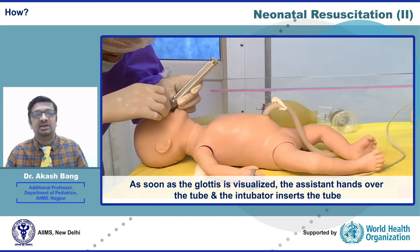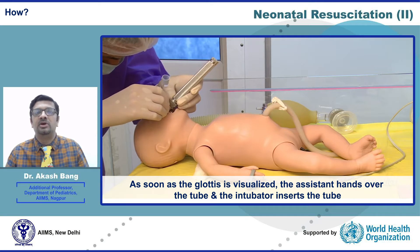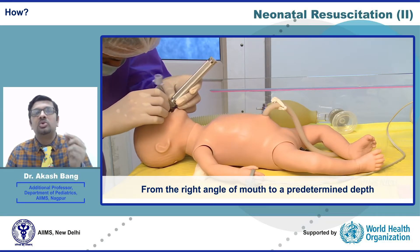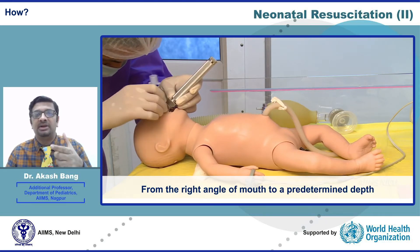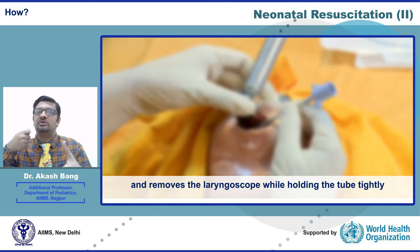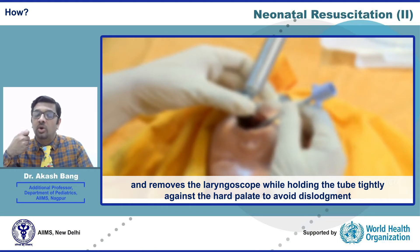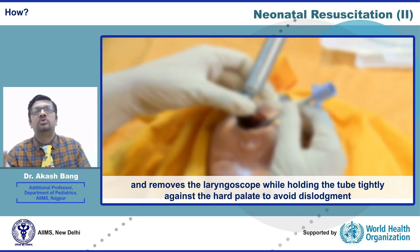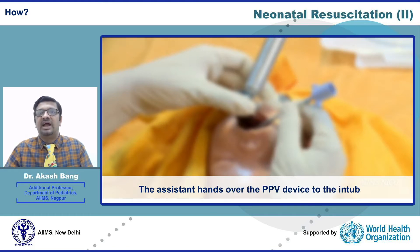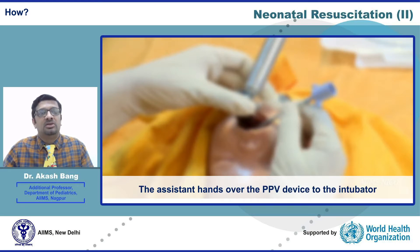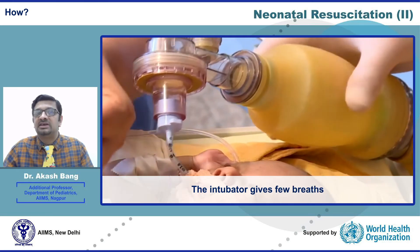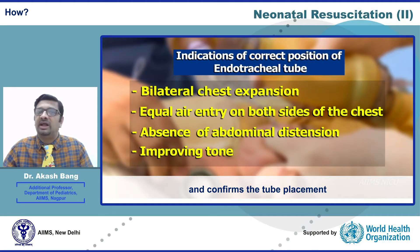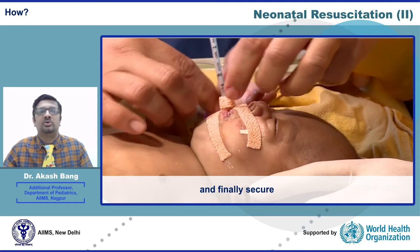As soon as the glottis is visualized, the assistant hands over the tube and the intubator inserts it from the right angle of the mouth to a predetermined depth, then removes the laryngoscope while holding the tube tightly against the hard palate to avoid dislodgement. The assistant hands over the PPV device to the intubator, who gives a few breaths to confirm tube placement, and then finally secures the tube.